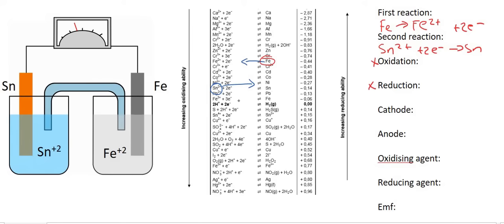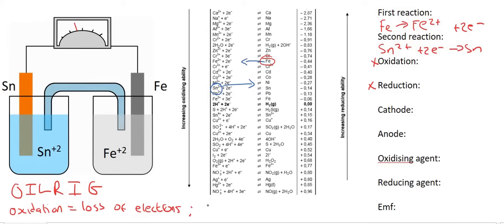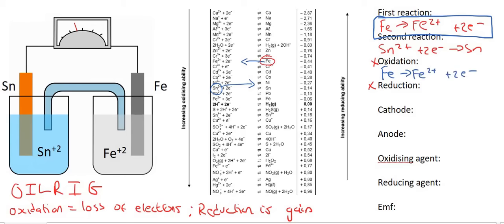We need to know the oxidation reaction and the reduction reaction. In our last lesson, we learned about OIL RIG. Oxidation is the loss of electrons, and reduction is the gain of electrons. This top reaction is an oxidation reaction because Fe is losing electrons, so that's going to be our oxidation reaction. Your reduction reaction is obviously going to be the other one — the Sn2+ — because Sn2+ is gaining electrons. The cathode is where reduction takes place, and so our reduction reaction is the Sn, and so this one would be the cathode — Sn. The anode is where oxidation happens, and that'll be Fe.